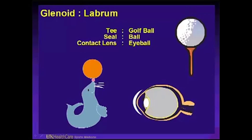Another analogy for a SLAP tear is the contact lens on the eyeball. If there is a little rent or tear in the contact lens, it won't have normal communication with the eyeball — there will be pain, bubbles, things won't work well. What we try to establish with arthroscopic labral reattachment — a SLAP repair — is to put the normal tissue back onto the glenoid, reestablishing that fine, balanced relationship: contact lens to eyeball, labrum to the glenoid and humeral head.